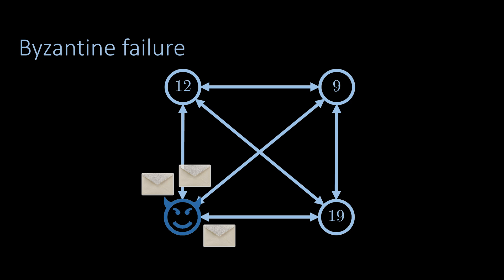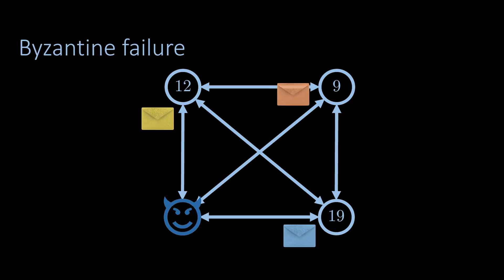As mentioned before, a Byzantine node may deviate from the protocol in arbitrary ways, for example sending only one message and dropping the others. Alternatively, a Byzantine node may send different, possibly contradictory messages to other nodes.